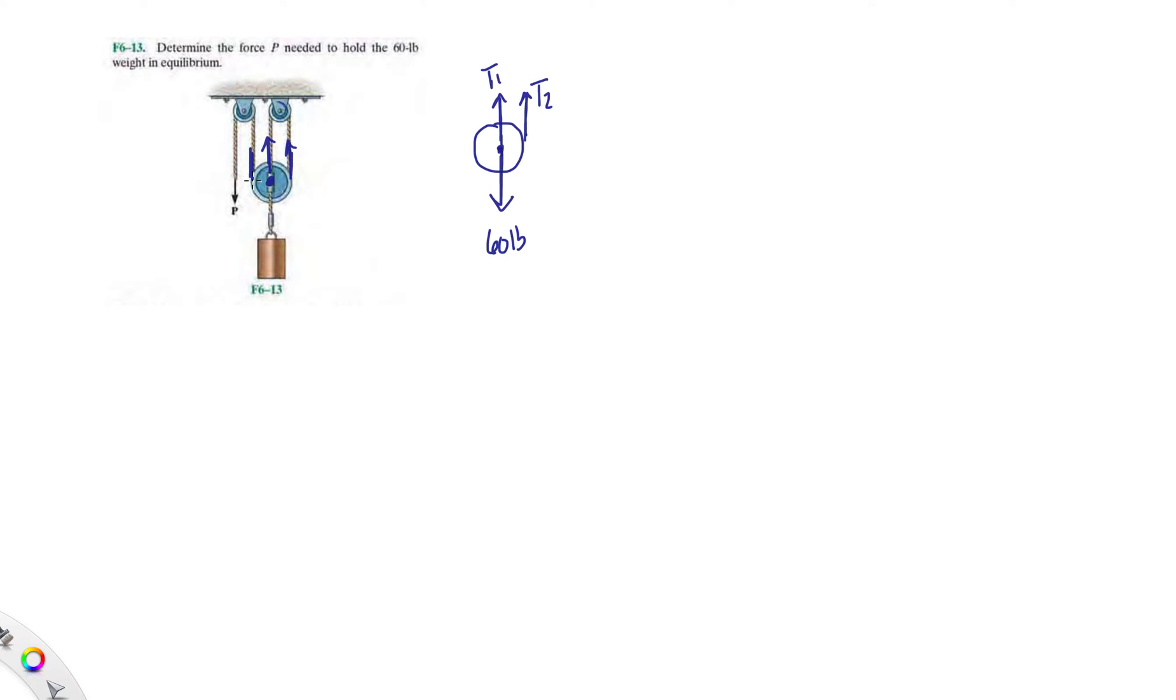And then over here, remember you're doing forces that are acting on that one body. And then you have T3. And because we said that tension on the rope doesn't change, we know that T1 equals T2 equals T3 equals P.